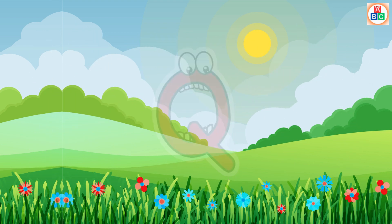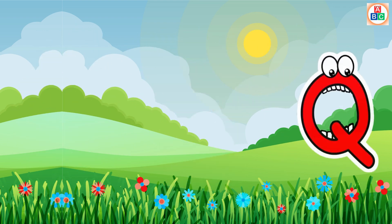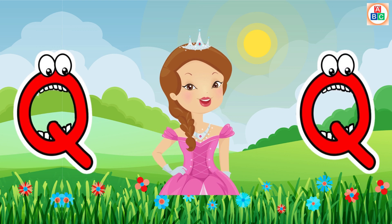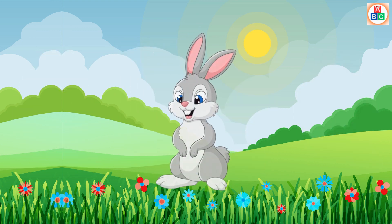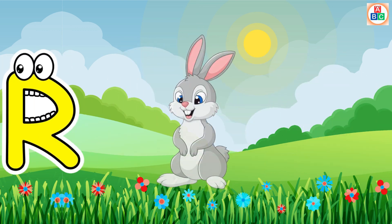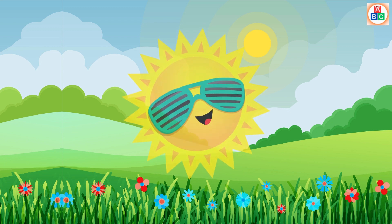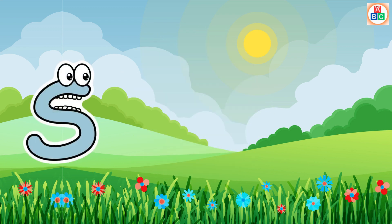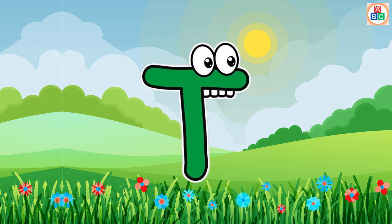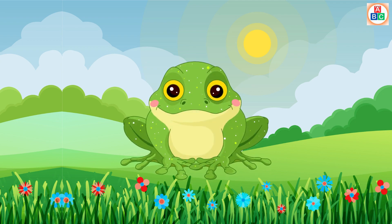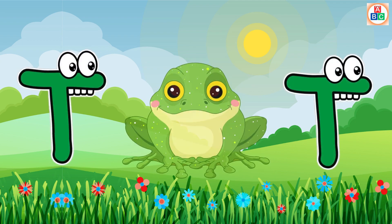Q is for Queen, Q-Q-Queen. R is for Rabbit, R-R-Rabbit. S is for Sun, S-S-Sun. T is for Toad, T-T-Toad.